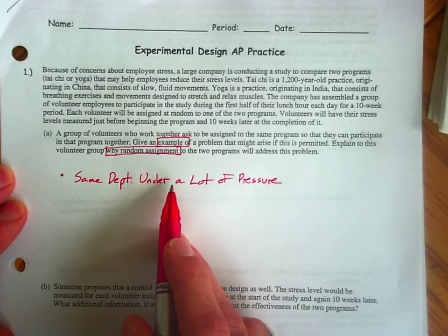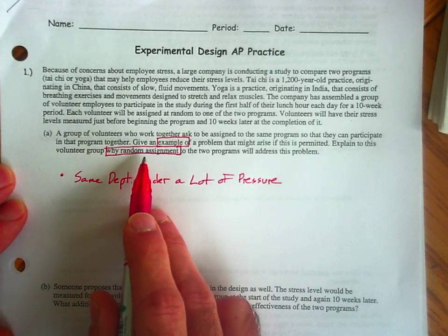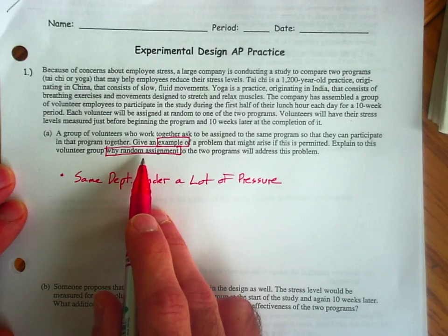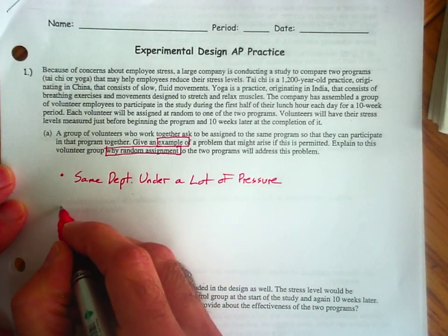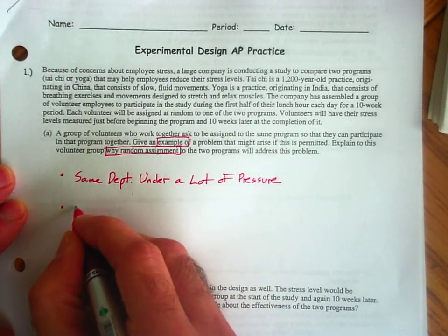So this idea of random assignment is to make groups that are comparable. So how does random assignment fix this? Random assignment makes comparable groups.